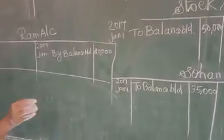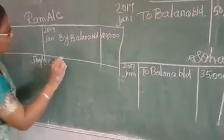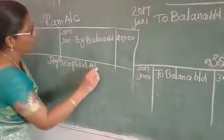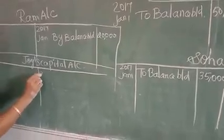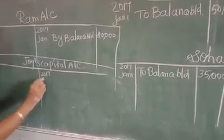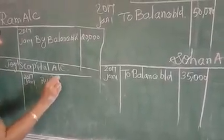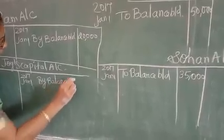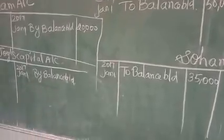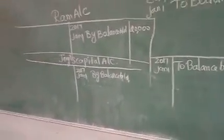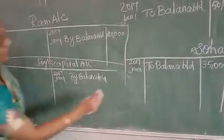Next one: capital account — Joy's capital account. That is also 2017, January 1. By balance brought down. What is the entry? By balance brought down: 1,60,000.